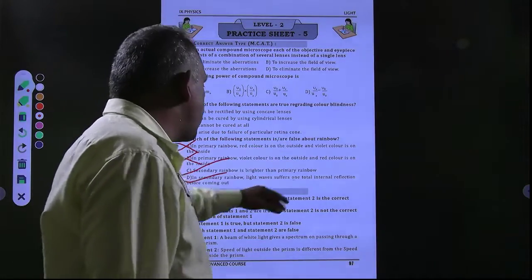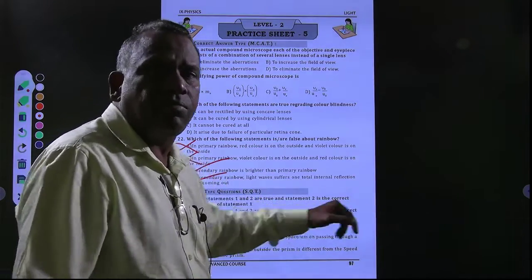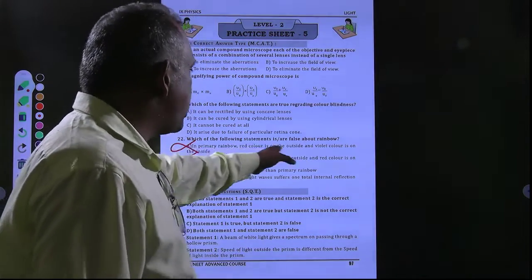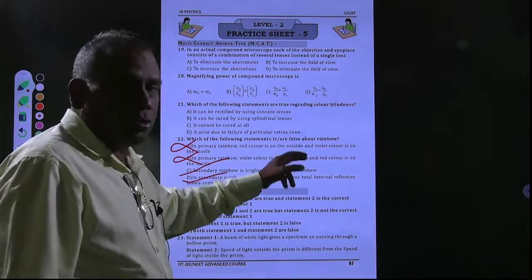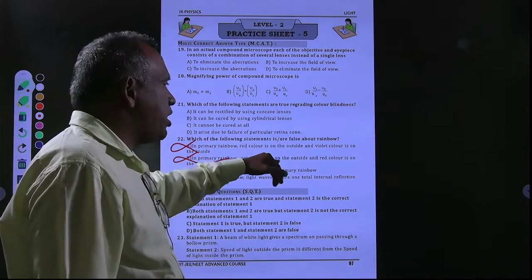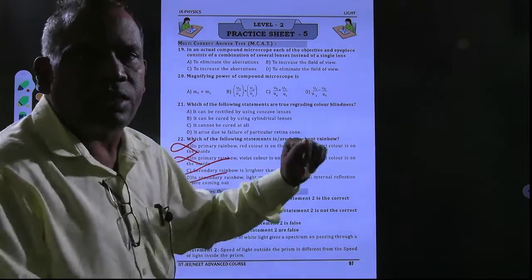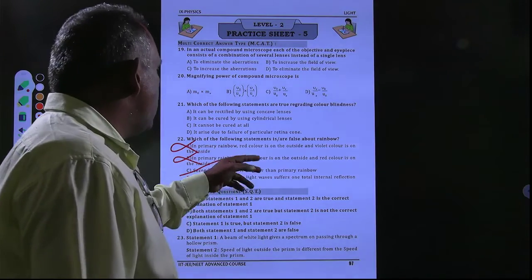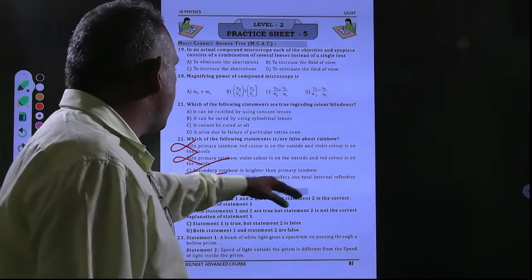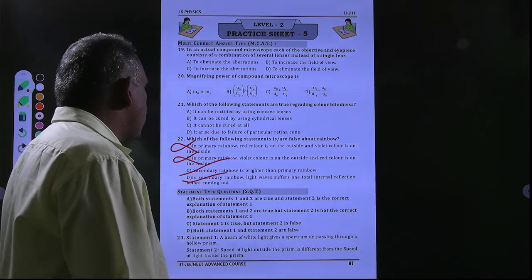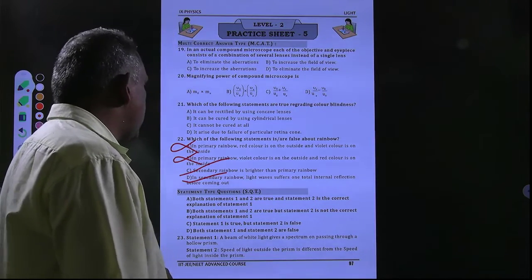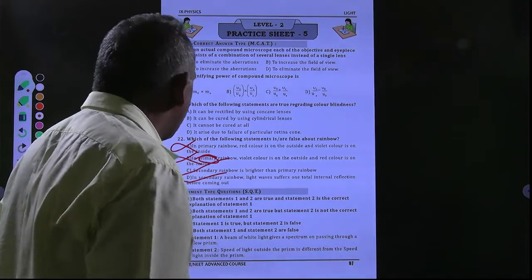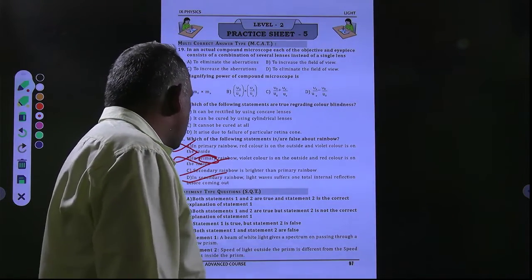So the false statements are: secondary rainbow is brighter than primary rainbow. For the primary rainbow, red color is outside and violet is inside — that is the true statement, but the question presents it as a false statement. There appears to be a printing mistake in this question; here it should say secondary rainbow instead of primary rainbow. So B, C, D are the correct answers. You need to correct this in your sheet.